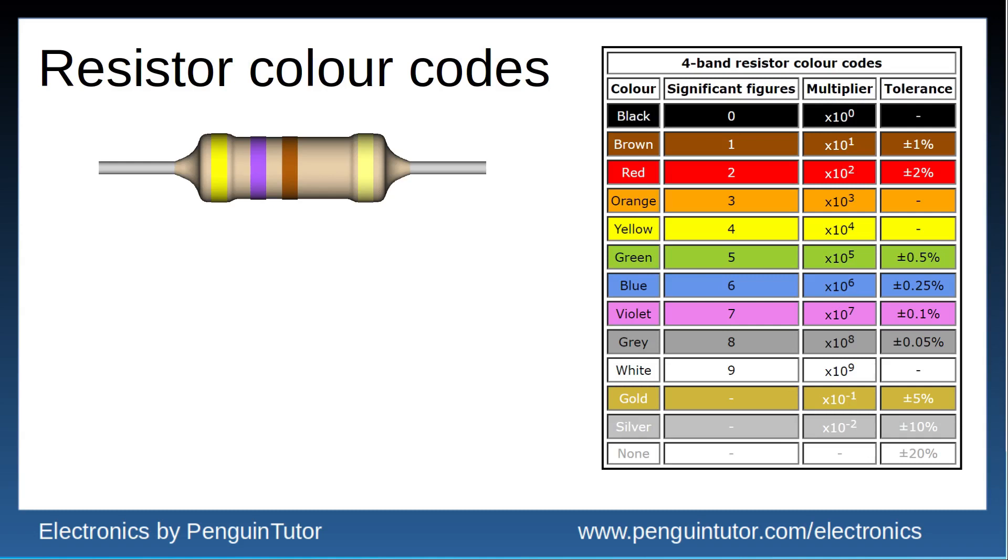The first two bands indicate the significant figures. The first band is yellow which is 4. The next is violet which is 7. The third band is the multiplier. It's how many powers of 10 the value is multiplied by, or if you prefer the number of zeros to add on to the end. It's shown in this column here.